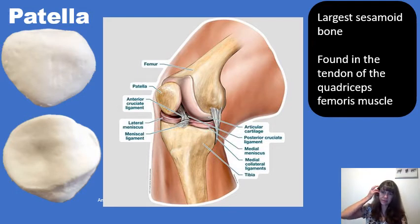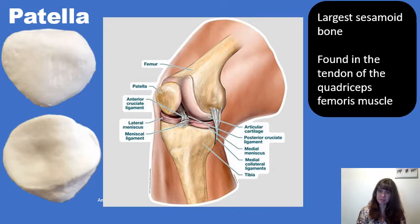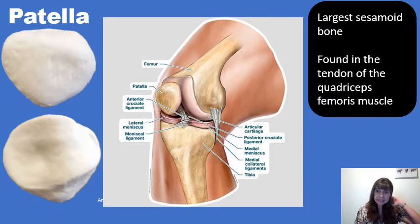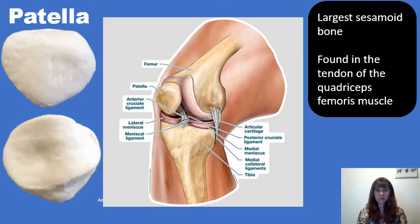All sesamoid bones have the unique characteristic of being embedded in tendons. It is common to see sesamoid bones embedded in the tendons that serve the hallux, which is the big toe, as well as sometimes the pollux, the thumb. The largest of all the sesamoid bones in the body is the patella, which is embedded in the tendon of the quadriceps femoris muscle group. Remember that tendon attaches to the tibial tuberosity.